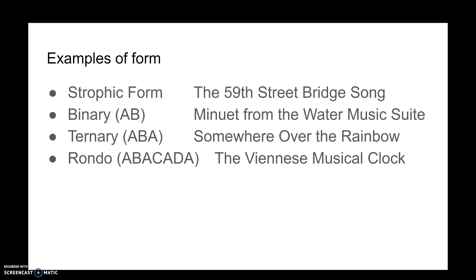Let's look at examples of each form type. Strophic form (A A A): Amazing Grace is a good example — just a verse repeated, never developing into a chorus. Binary form (AB): the Minuet from Handel's Water Music Suite, which we studied comparing Handel and Vivaldi in the Baroque era, has an A part and a B part. Ternary form (ABA): Somewhere Over the Rainbow — the A part is 'Somewhere over the rainbow,' the B part is 'Someday I'll wish upon a star,' before returning to the A part.